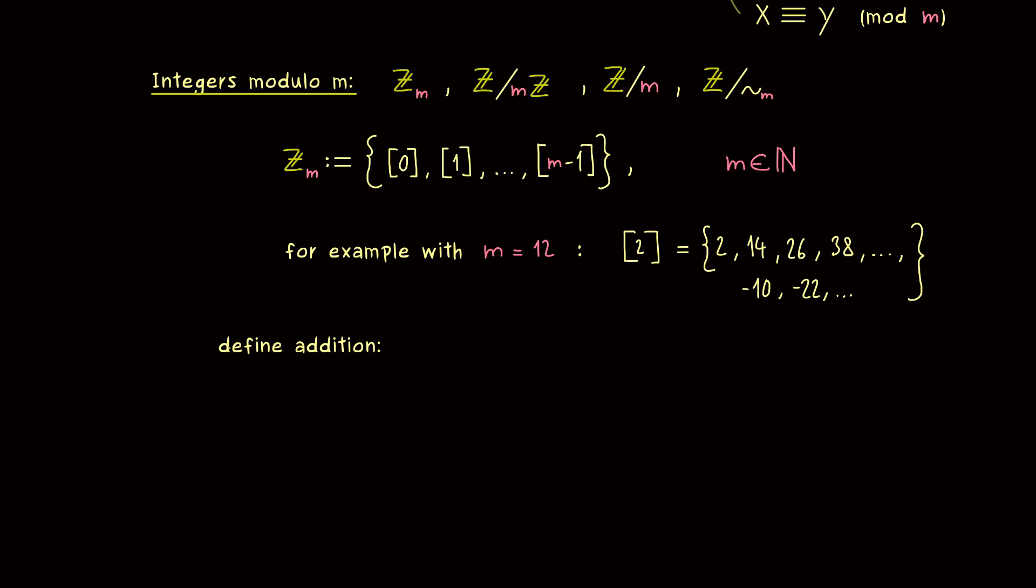We can also calculate with these boxes. Namely, the integers modulo m inherit the addition operation. This means if you take two boxes, then we can define an addition. So let's say we have an integer k here and an integer l. And here please don't forget, even in the case that k is not equal to l, they still could describe the same box. So for example here, 2 and 14 describe the same equivalence class. This is important to know.